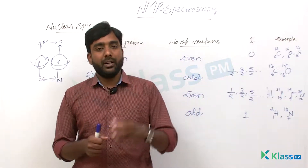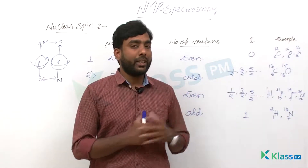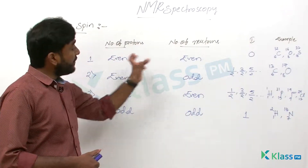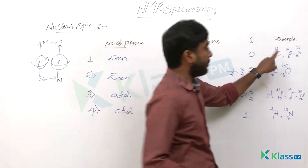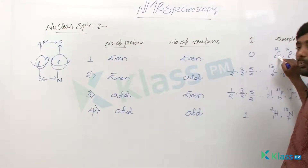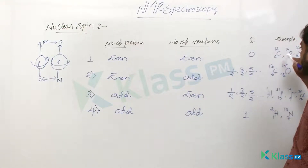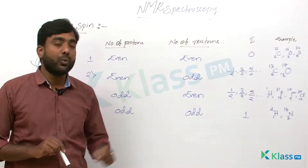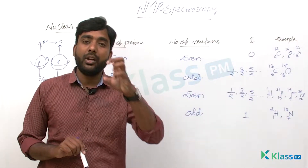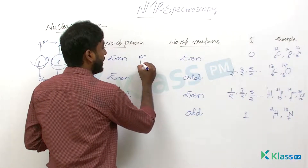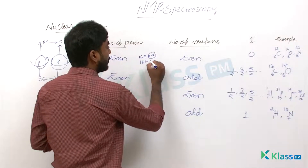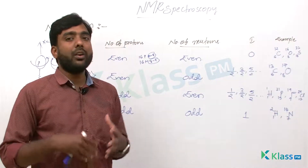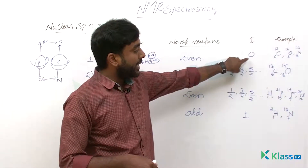Based on this concept, some nuclei are NMR active and some are inactive. When the number of protons and neutrons are both even — for example, C-12 has 6 protons and 6 neutrons, O-16 has 8 protons and 8 neutrons, and S-32 has 16 protons and 16 neutrons — the pairs cancel each other. The resultant magnetic field will be zero, and there will be no interaction with the external magnetic field. That is why the I value is zero.